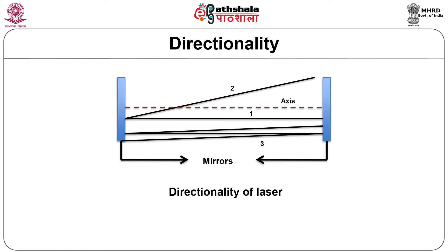The output of a laser is many million times more focused than the best searchlight available. Hence lasers can be used to monitor distant objects. For example, the Earth-Moon distance is monitored using laser. Retro-reflectors were mounted on the Moon during the Apollo programs. The total time for the beam's to-and-fro journey is measured, and it has been found that the Moon is moving away from the Earth by a few inches every year.